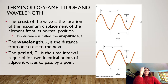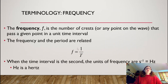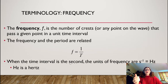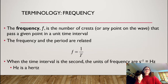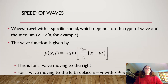If you had a stopwatch and saw one crest, started it, then saw the next crest and stopped it, that would be your period T. The frequency is equal to one divided by the period. To measure frequency you'd pick a set time interval — say ten seconds — count how many crests pass your reference point, and divide that number by the time. The SI unit of frequency is the Hertz, which is an inverse second, and the frequency in Hertz is the number of oscillations per second.